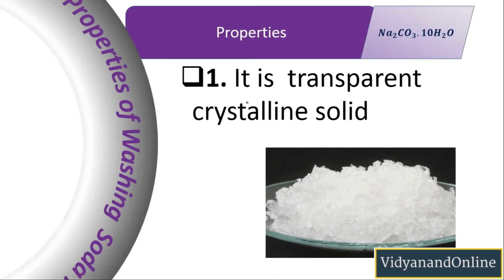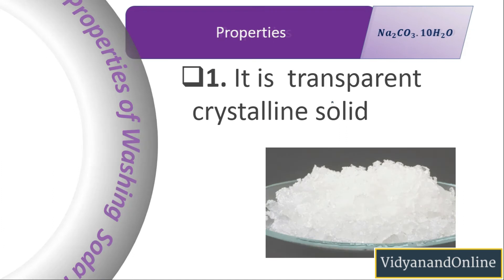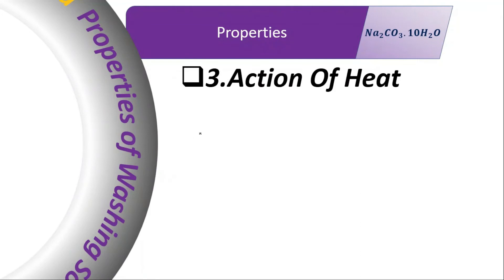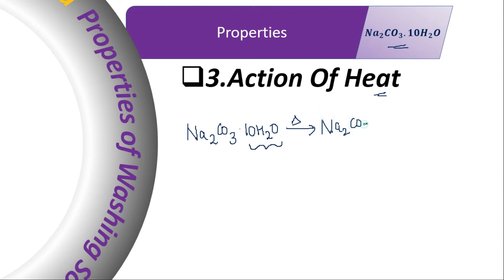Let us see the properties of washing soda. It is a transparent crystalline solid. It is soluble in water — in fact, washing soda is among very few carbonates that are soluble in water. When washing soda (Na2CO3·10H2O) is heated, it loses its 10 molecules of water of crystallization, leaving Na2CO3. Since this contains no water molecules, it is called soda ash or anhydrous sodium carbonate.